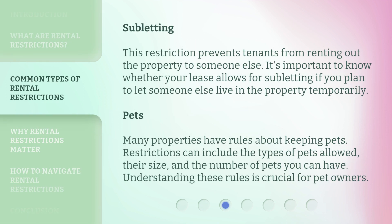Subletting: this restriction prevents tenants from renting out the property to someone else. It's important to know whether your lease allows for subletting if you plan to let someone else live in the property temporarily. Pets: many properties have rules about keeping pets. Restrictions can include the types of pets allowed, their size, and the number of pets you can have. Understanding these rules is crucial for pet owners.